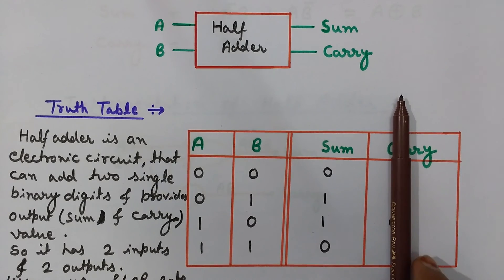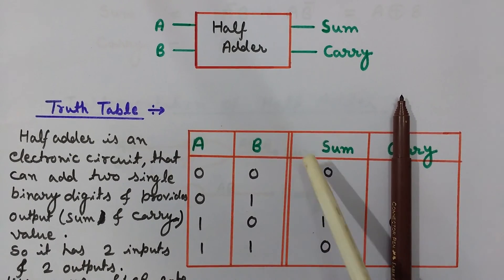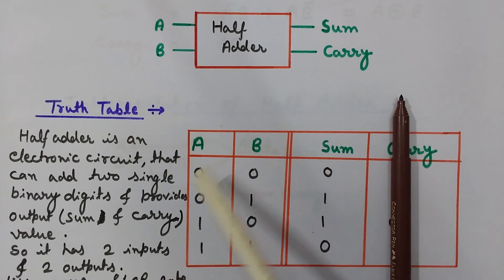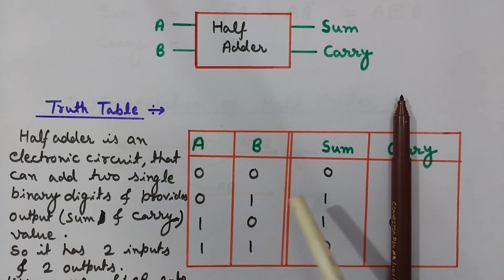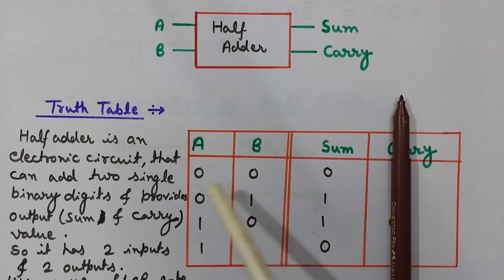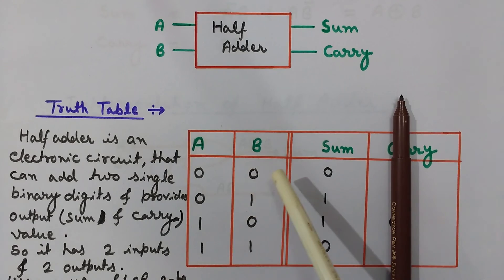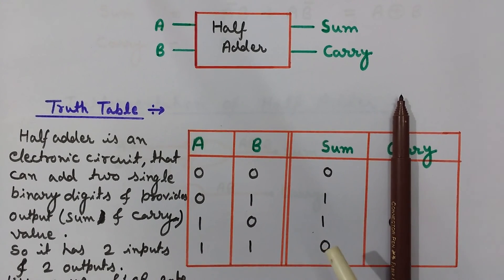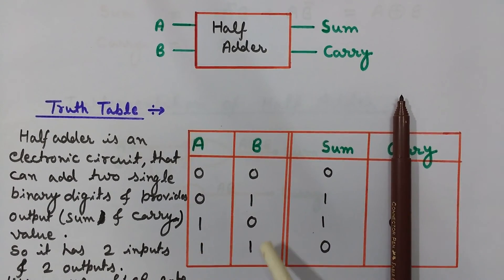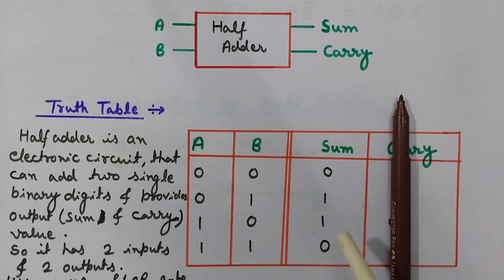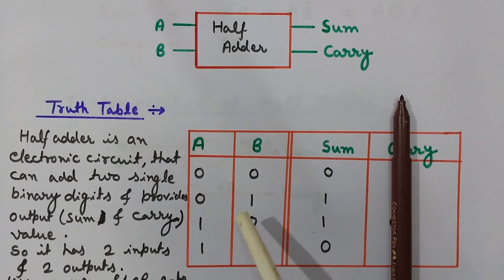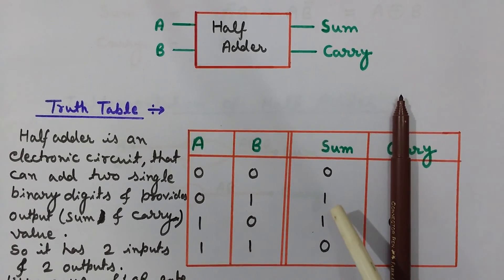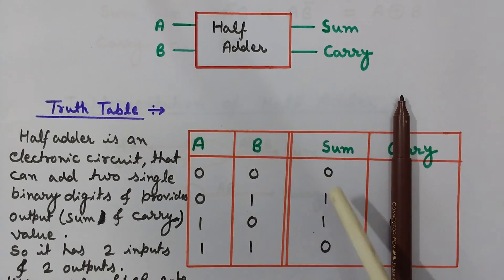Now if you observe the sum column of the truth table, you can see that when inputs A and B are the same — both 0 or both 1 — the sum is 0, and when inputs are different the sum is 1. This is exactly the behavior of an XOR gate. Therefore, Sum = A XOR B, which is A̅B + AB̅.